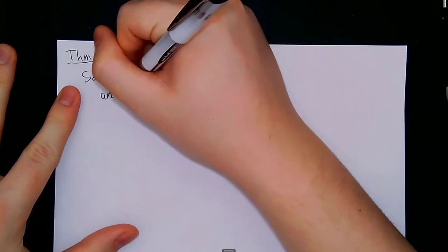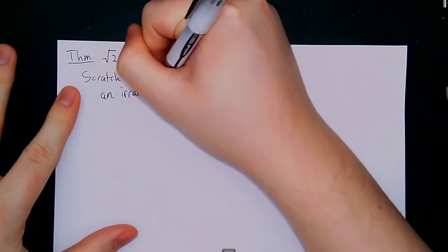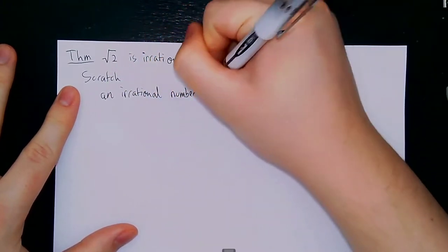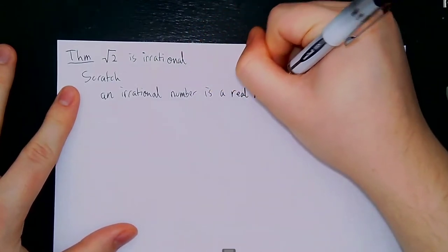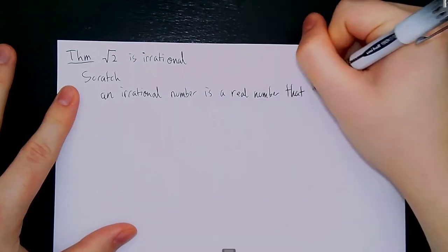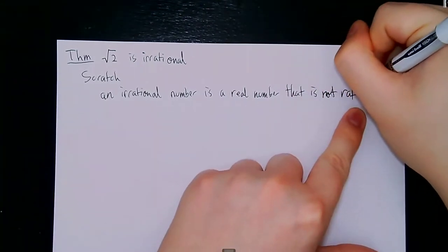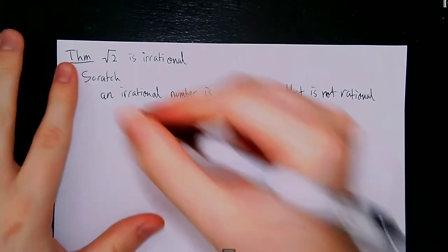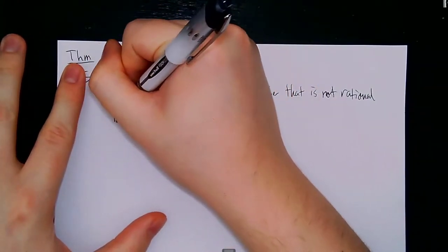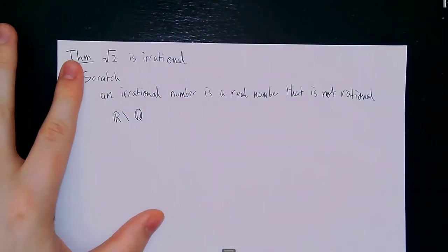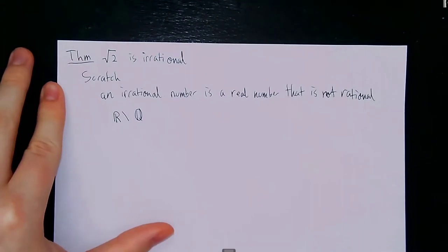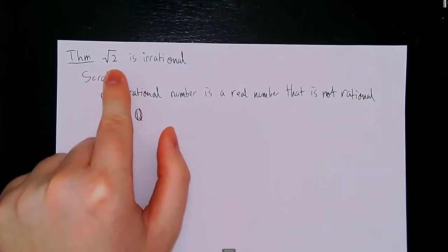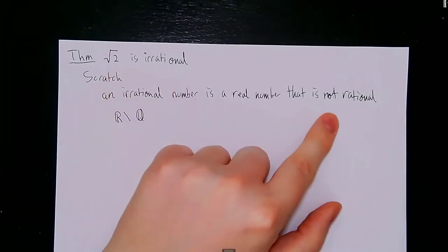An irrational number — and this is the only definition we have for an irrational number — is a real number that is not rational. We can define the set of all irrational numbers as the real numbers minus the rational numbers. It's easy to show that √2 is a real number because it's not imaginary, but how do we figure out that it's not rational?